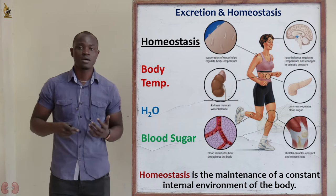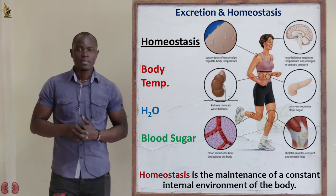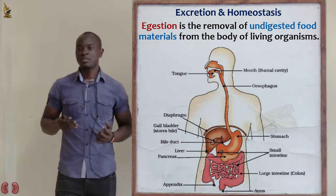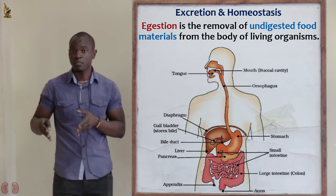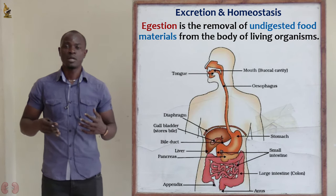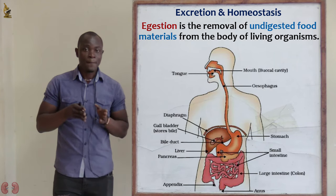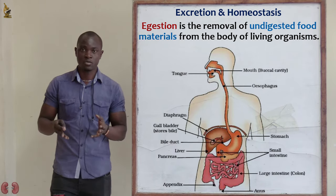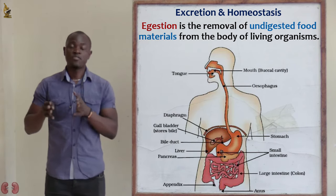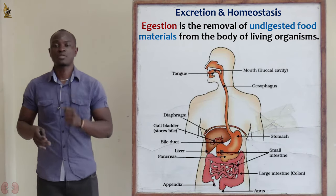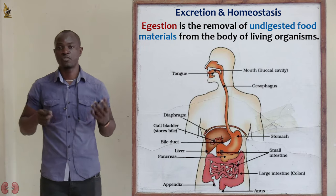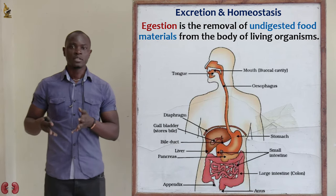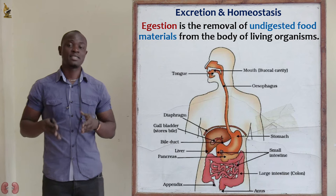Apart from homeostasis, let's define egestion. Egestion is the removal of undigested food materials from the body. Do not confuse this with excretion — excretion is the removal of metabolic waste materials. Egestion specifically refers to undigested food materials being removed after the process of digestion. These undigested materials leave the body as feces when someone goes to the washroom.